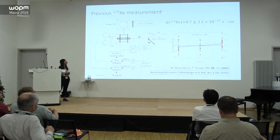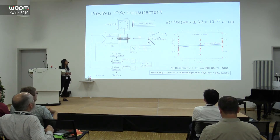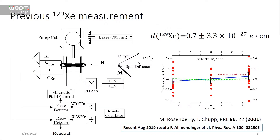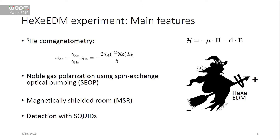The previous xenon EDM measurement was in 2001 and achieved a sensitivity of about 3×10⁻²⁷, using a dual-species maser with xenon and helium as a comagnetometer. There is also a very recent measurement that came out last week. The experiment I work on is the HEXA EDM experiment — a xenon EDM measurement using a helium-3 comagnetometer.